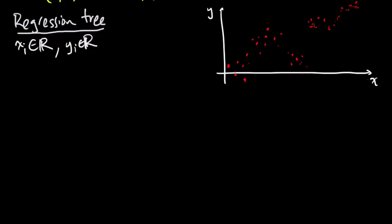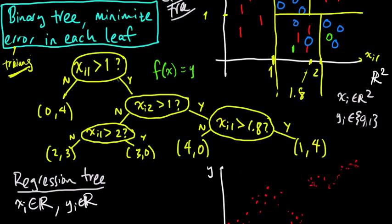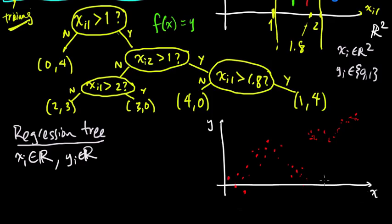Just like before, our general approach for a classification or regression tree is to construct a binary tree and minimize the error in each leaf. So let's choose some tree — just an arbitrary one for now — and later we'll talk about how to choose a tree in a good way. Say we split here first, dividing the x's into all the ones on this side and all the ones on this side. That looks like a pretty good split. Now let's split over here — this looks like a pretty good split too — and then another one here.